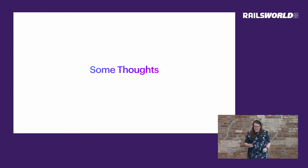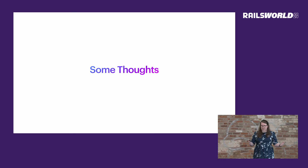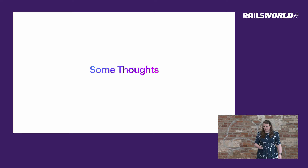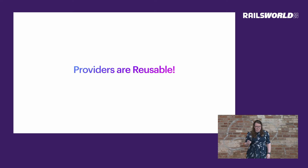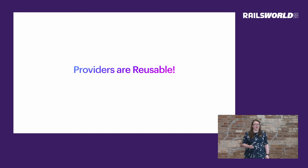That was a lot to take in, but the key is that by making a few changes to Active Record, we've enabled seamless integration with external providers like Wistia and Pexels. These providers allow us to extend file upload functionality and offer more flexibility, all within the familiar Rails interface. Once the providers are set up, you just reuse the functionality across your entire application.